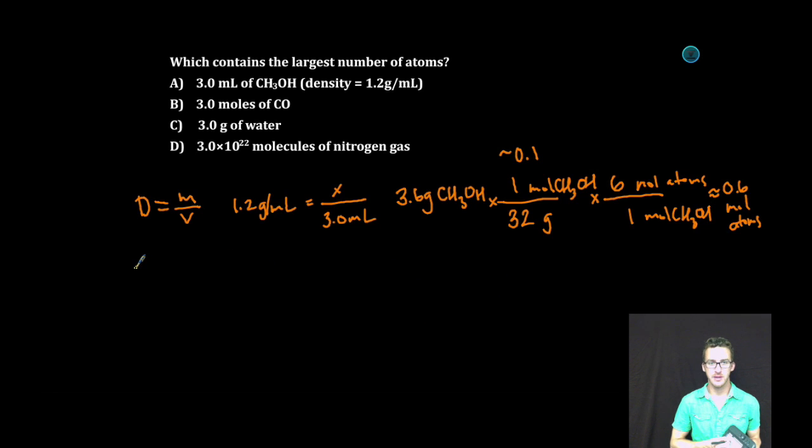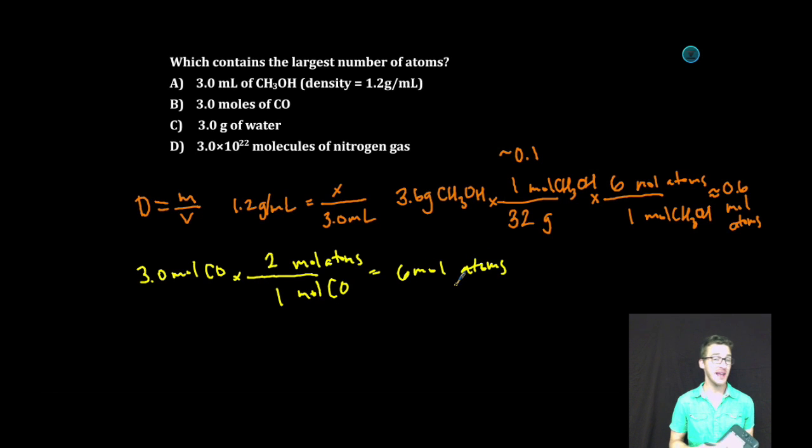Let's move on to option B. In B, we've got 3.0 moles of CO. I'm going to go from moles of CO to moles of atoms. Every one mole of CO, I've got two moles of atoms. I've got a mole of carbon and a mole of oxygen, which means that in my three moles of carbon monoxide, I've got six moles of atoms. So, between A and B, I can already tell that B is the one that's got the largest number of atoms between the two. Let's keep going.